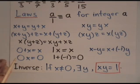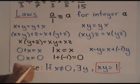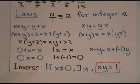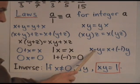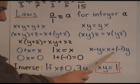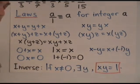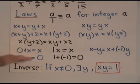And then there's some special laws having to do with the three special numbers, zero, one, and minus one. Zero plus x is x. Zero times x is zero. One times x is x. And one plus minus one is zero. The reason why minus one is important, because it's used to define subtraction. X minus y is, by definition, x plus minus one times y.